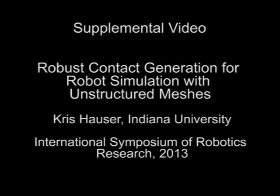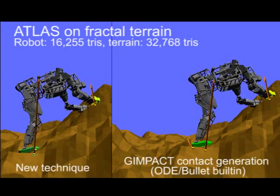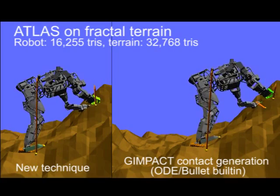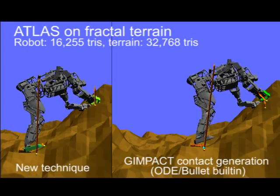This paper presents a new method for generating contacts between unstructured meshes in rigid body simulation. The method produces stable contact estimates and exhibits fewer collision artifacts than existing techniques.